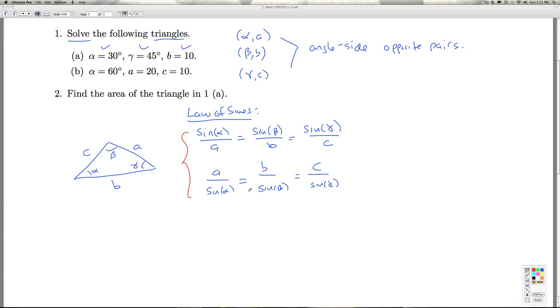So this is really the same mathematical equation here because none of these quantities can be zero in a triangle. So we're given alpha is 30 degrees, gamma is 45 degrees, and B is 10.